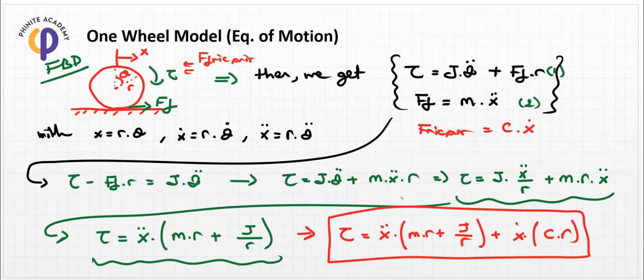This is the final equation representing the one-wheel model equation of motion in system dynamics. These are the general notations, and we need to calculate the J and M values using shape parameters and material selection. In the next lesson we will focus on that. As engineers we need to design J and M based on shape parameters and material selection.